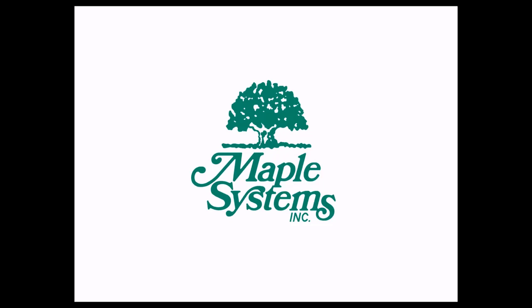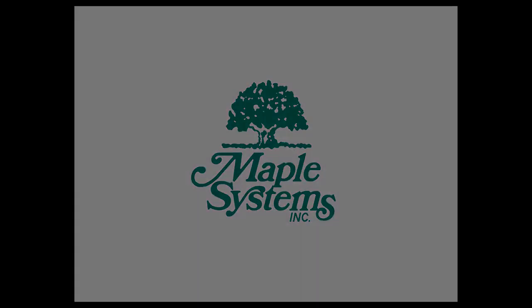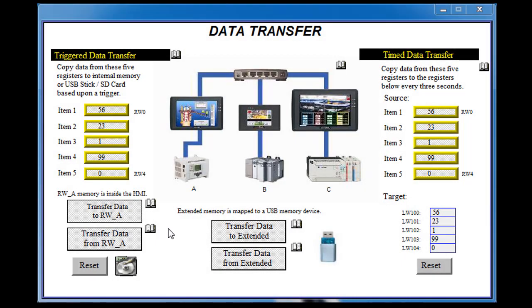Data collection from one PLC can be sent to another PLC using the data transfer feature of the OIT. Time-based data transfers allow you to capture data automatically based upon a predefined time interval, or use the trigger-based feature to capture data on demand.